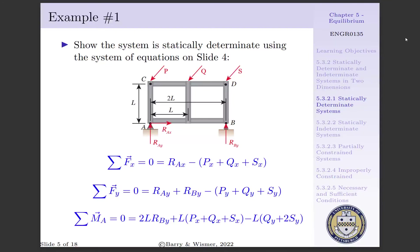Lastly, we consider the moment equation. The summation of moments about point A has to equal 0. Since the rotational point is A, the forces RAY, RAX, and PY do not contribute to the moment equation. Considering moment arm 2L, RBY creates a counterclockwise moment. PX, QX, and SX act on moment arm L, while QY acts on L and SY acts on 2L, creating clockwise moments. Thus, summing moments: 2L·RBY + L(PX + QX + SX) − L(QY + 2SY) = 0. Combining this with the summation of forces in the Y direction, we have two equations and two unknowns: we solve for RBY via the moment equation, substitute into the Y force equation to solve for RAY, and RAX was already solved from the X force equation.